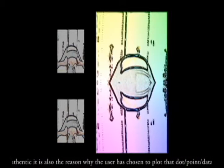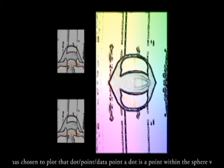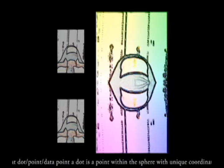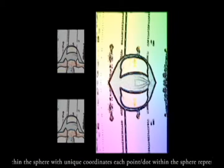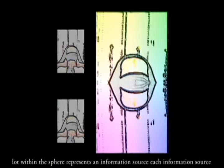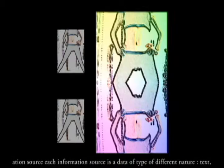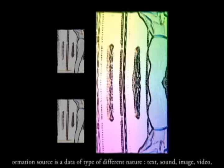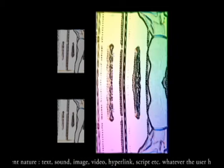Part of the sphere can be locked and unlocked. Each dot on a sphere comes from a point within a web that the user identifies as authentic. That is also the reason why the user has chosen to plot that dot.